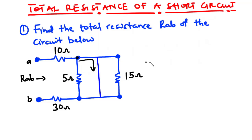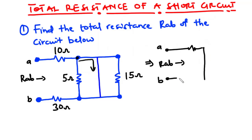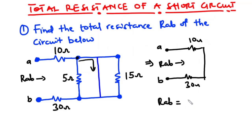With both the 5-ohm and 15-ohm resistors short-circuited, the circuit reduces to terminals A and B with only the 10-ohm resistor connected in series with the 30-ohm resistor. To find the total resistance, since the two resistors are in series, we sum them: Rab = 10 + 30 = 40 ohms. So the total resistance for this circuit is 40 ohms.